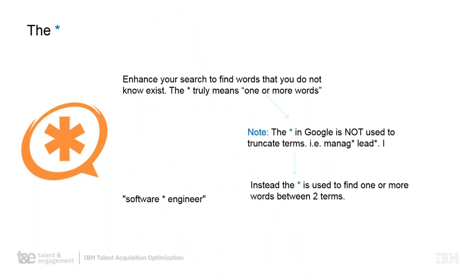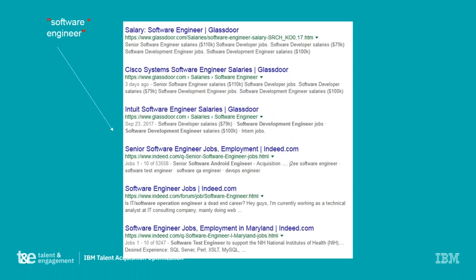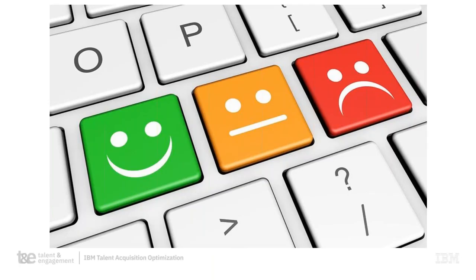The next operator is the asterisk. This is used when you don't know a word — for example, if you're looking for a software engineer but might also want software lead engineer or software design engineer. You're not sure what somebody might call themselves, especially in a title. Running 'software * engineer' comes back mostly pulling software engineer, but adding other keywords expands the search further.